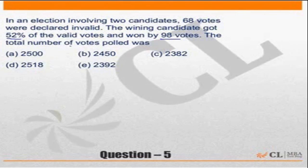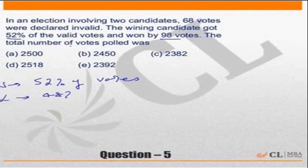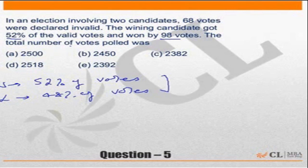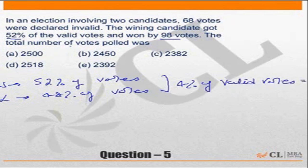The winning candidate gets 52 percent of the valid votes and the losing candidate gets 48 percent of the valid votes. In other words, the difference between the two of them is 4 percent of the valid votes, which is equal to 98. So 100 percent should be equal to 98 into 25.